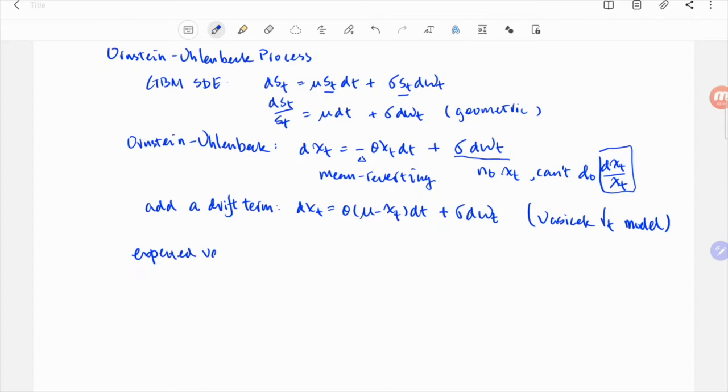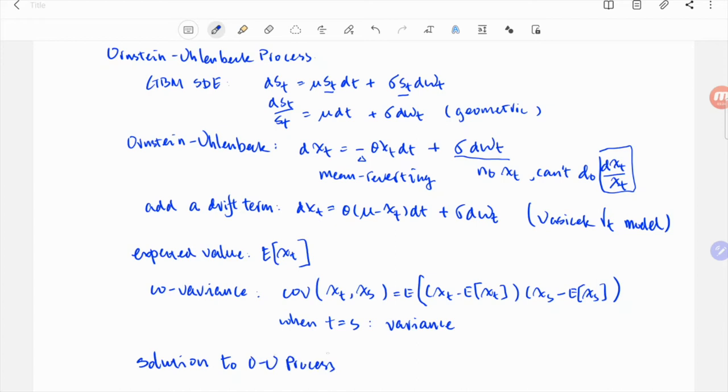To study an SDE, usually people will first calculate the standard statistics, such as expected value, covariance, and variance. We can also try to solve the SDE altogether. For Ornstein-Uhlenbeck process, it needs some crucial tools including Itô isometry and a variation of parameters, which I'll try to elaborate in an intuitive way.